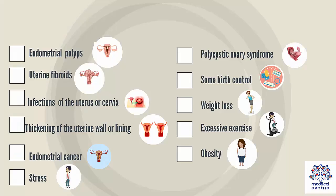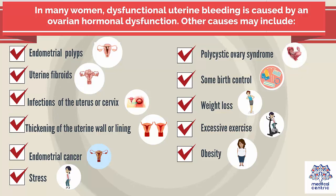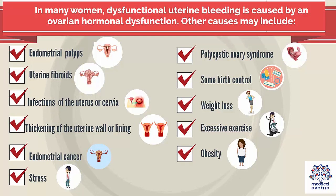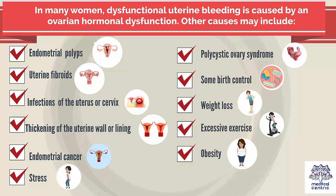Causes. In many women, dysfunctional uterine bleeding is caused by an ovarian hormonal dysfunction. Other causes may include endometrial polyps, uterine fibroids, infections of the uterus or cervix, thickening of the uterine wall or lining, endometrial cancer, stress, polycystic ovary syndrome, some birth control methods, weight loss, excessive exercise, and obesity.